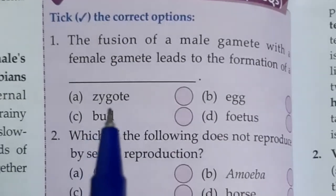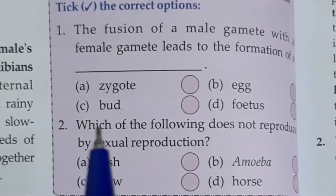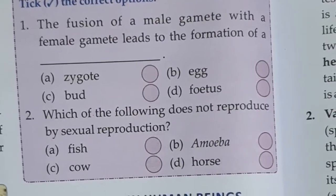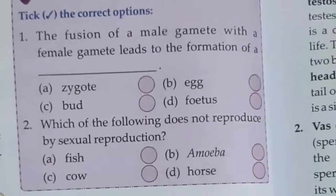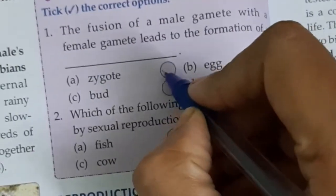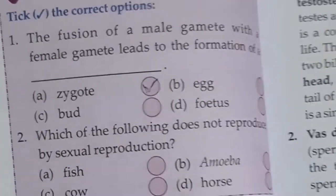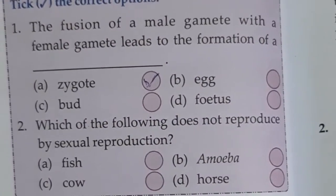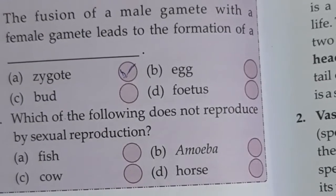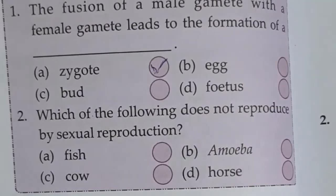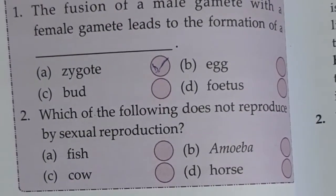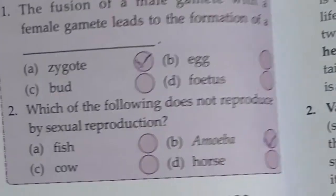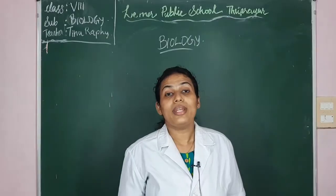The options are: A) zygote, B) egg, C) bud, and D) fetus. The fusion of male gamete with the female gamete leads to the formation of option A — zygote. The second question: which of the following does not reproduce by sexual reproduction? The options are fish, amoeba, cow, and horse. The answer is option B — amoeba.